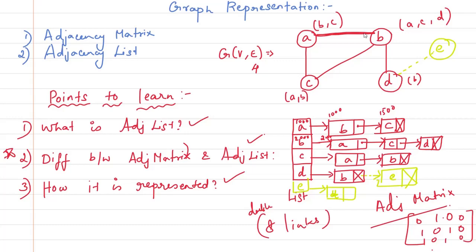For a directed graph, the graph specifies directions, so the adjacency list links will equal the number of edges — not doubled. For example, in a directed graph: A to B, A to C; B to C, B to D — connections only exist in the specified directions.